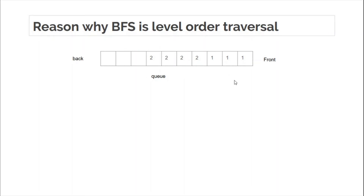This is why the algorithm works: the queue's FIFO (first in, first out) property is what makes level-order traversal possible. If you run the same algorithm using a stack instead of a queue — last in, first out — that would be DFS. All you have to do is change the data structure from queue to stack and it becomes DFS. The implementation of BFS will be explained in the next lecture, where I'll take a problem from HackerEarth and solve it.